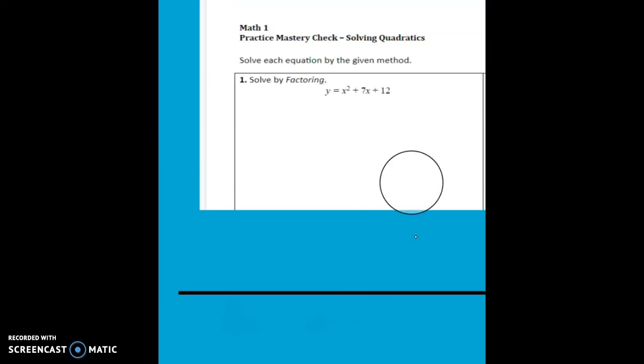This problem tells us to solve by factoring. The first rule of factoring is to look for a GCF. This one doesn't appear to have one, so we're going to use the box method because it has three terms.